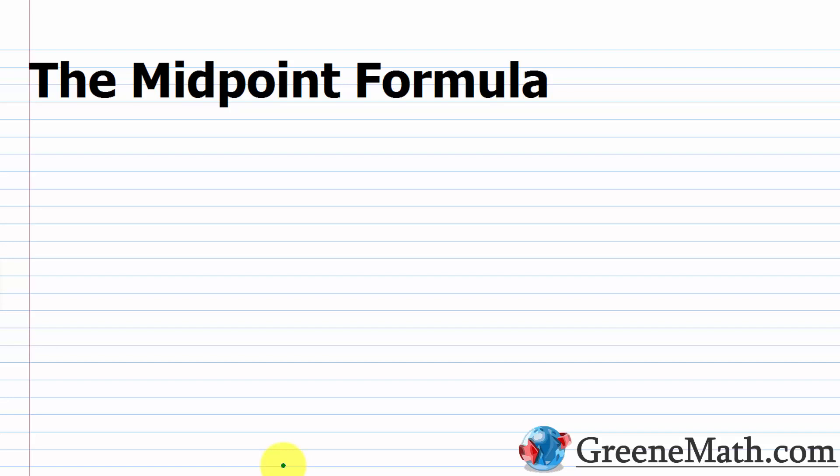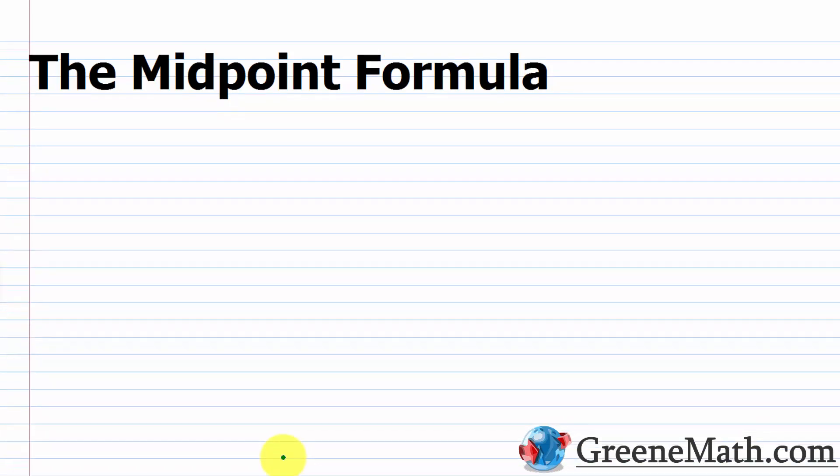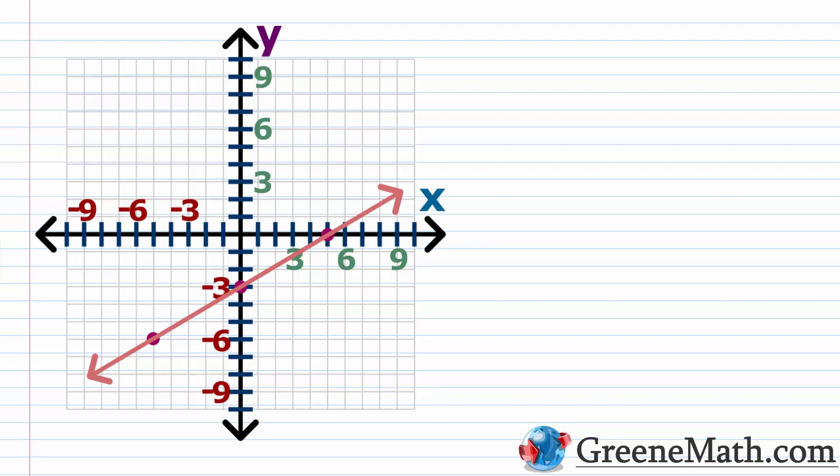In this lesson, we want to discuss the midpoint formula. Over the course of the last few lessons, we've been talking about the coordinate plane and various related topics. We already talked about how to find the distance between two points, talked about finding if three points are vertices of a right triangle, and we talked about how to determine if three points were collinear, meaning they lie on the same line.